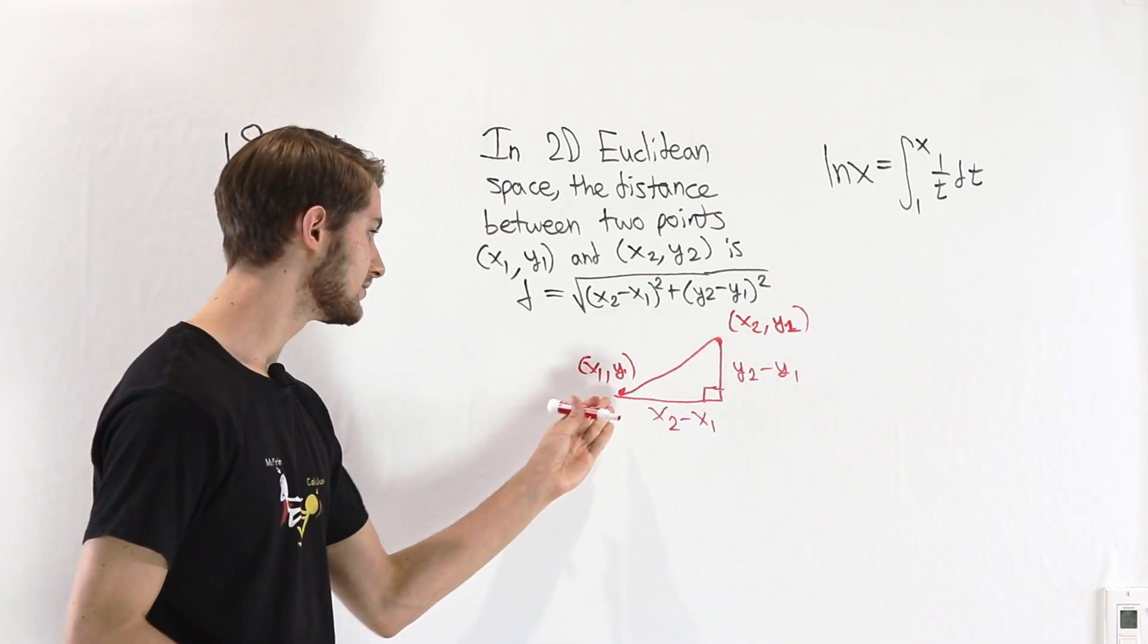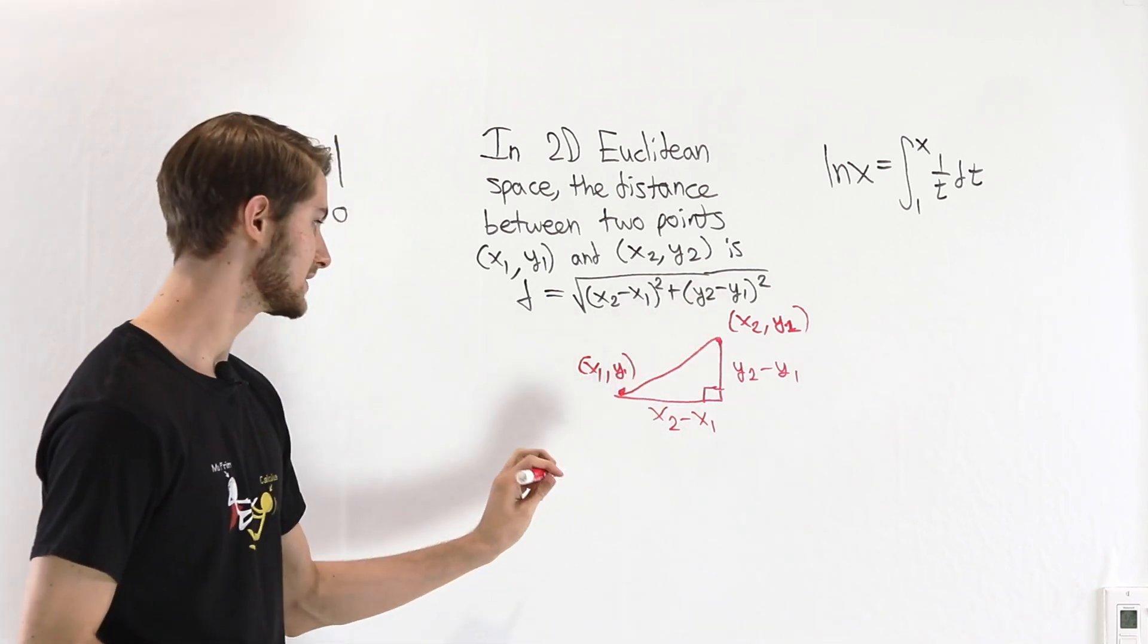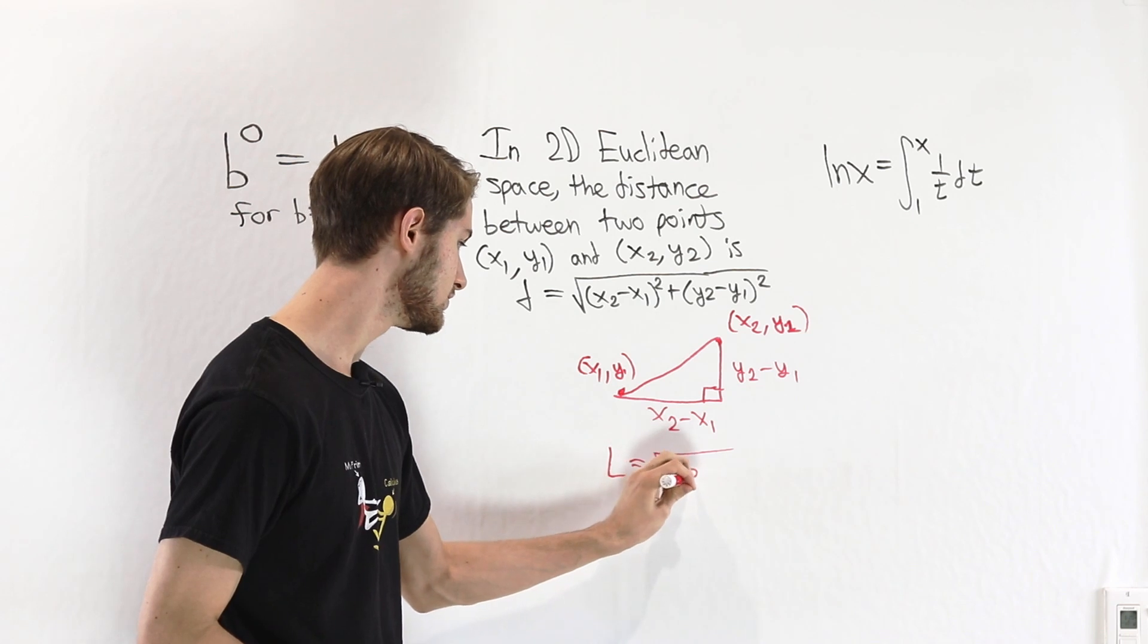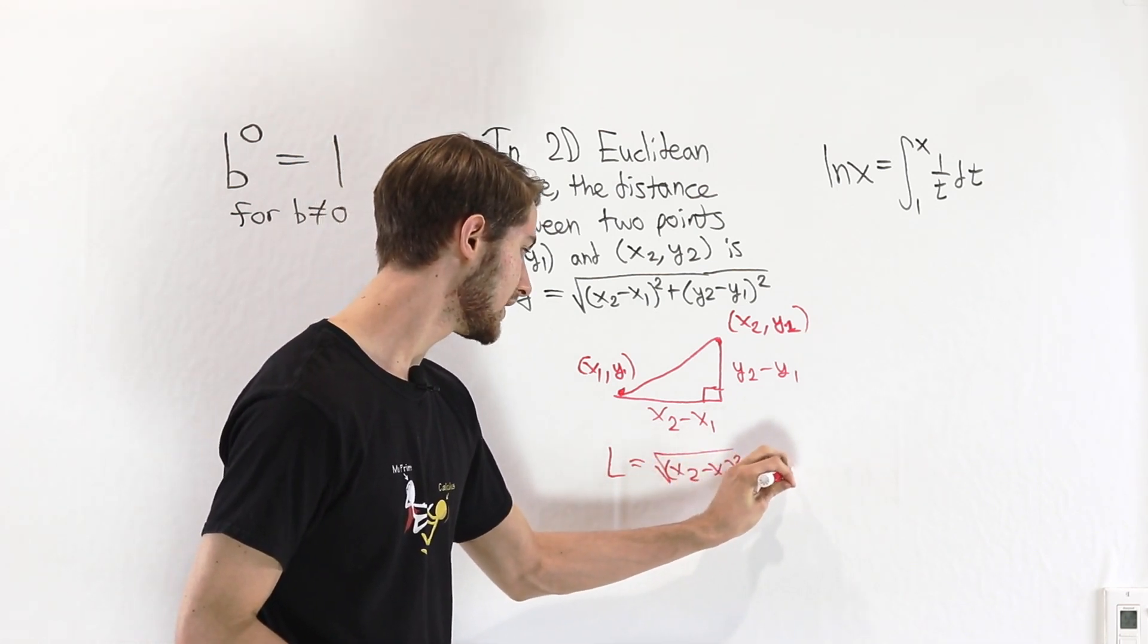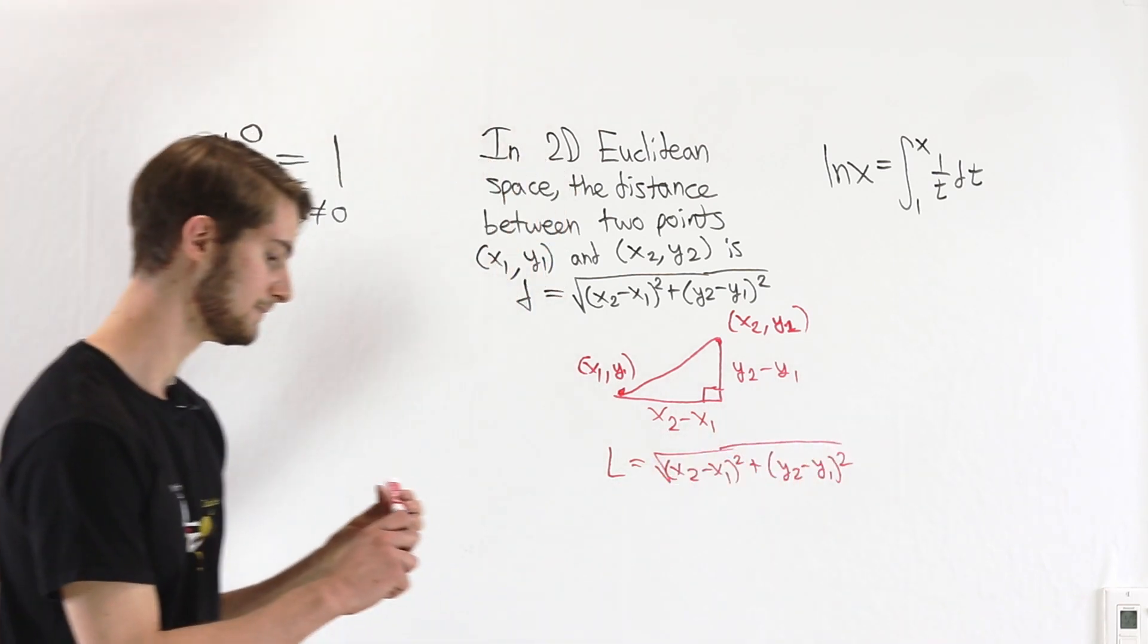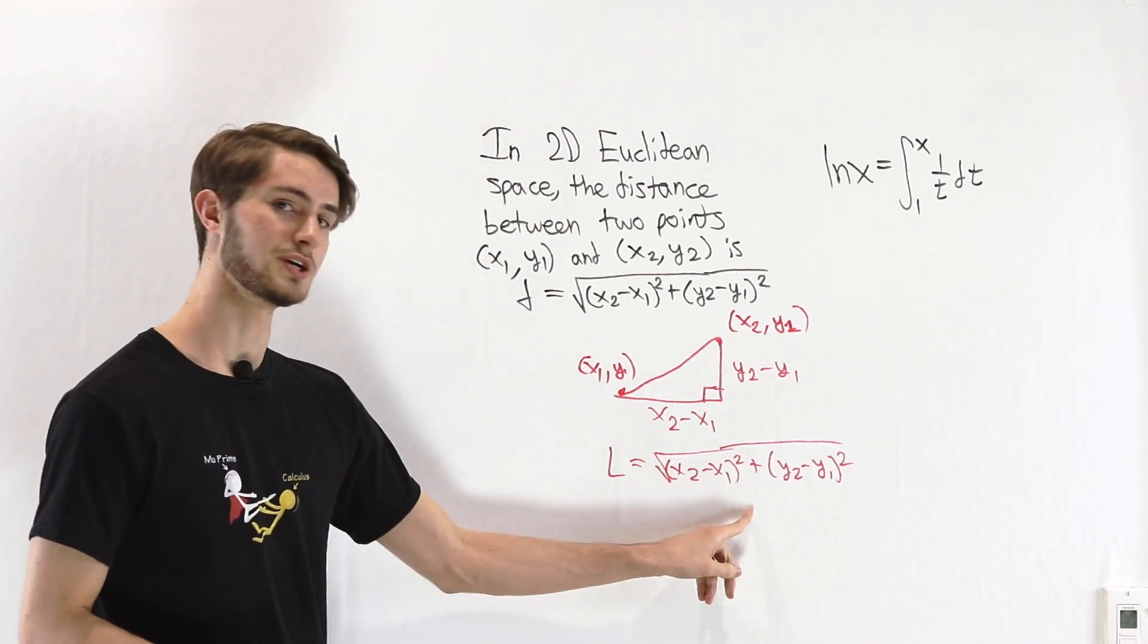Then the length of this segment connecting them would be the square root of (x2 minus x1) squared plus (y2 minus y1) squared by the Pythagorean theorem. That is something we can prove.